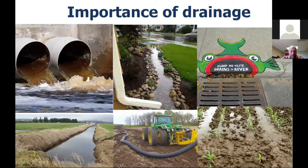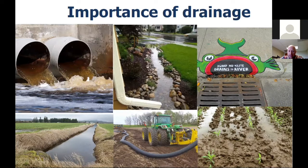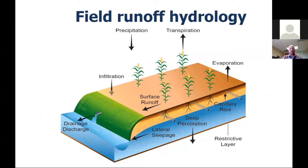Drainage is pretty important whether we're talking about urban, residential, or agricultural landscapes. The need to manage water is paramount in our society today. Whether we're talking about surface ditching or tile drains, when we encounter poorly drained and imperfectly drained soils, we need to better manage those through ditching and tiles.